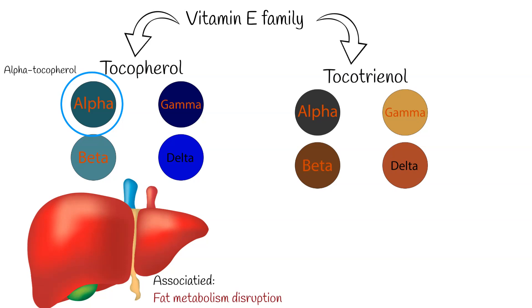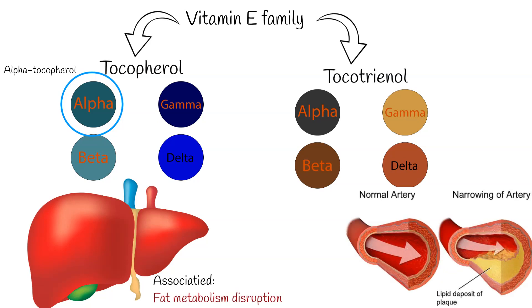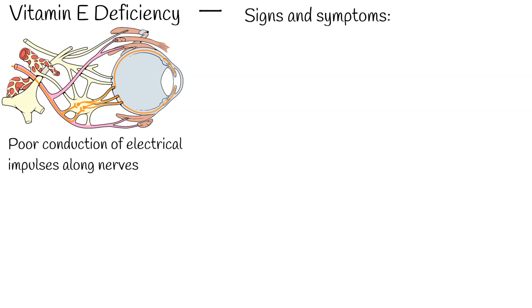Vitamin E may have a role in reducing atherosclerosis and lowering rates of ischemic heart disease. Vitamin E deficiency can cause nerve problems due to poor conduction of electrical impulses along nerves, resulting from changes in nerve membrane structure and function.